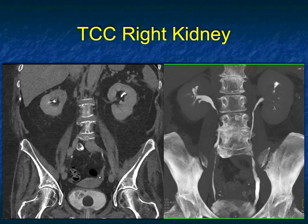In the real world you wouldn't have an issue, because you would have had all of the other images. If you look at the image on the left, the left kidney looks fine and you would not have called it an infiltrating process just because the calyces are not well seen on the single MIP image.